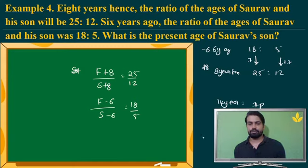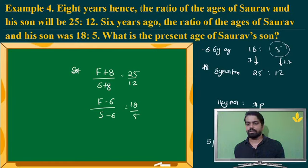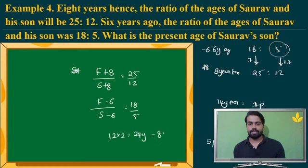Find the present age of father and son. Taking 6 years ago when son had 5 parts — 5 parts is actually 10 years — that was 6 years ago. So present age of son is 10 plus 6, which is 16 years. Alternatively, after 8 years it is 12 parts which is 24 years; minus 8 also gives 16 years. In any way, the answer is the same.